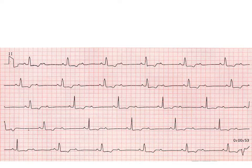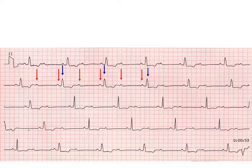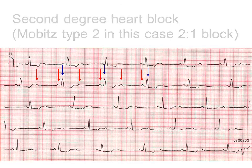On the other hand, in this situation we have regular P waves with every other beat conducted. So again some beats are conducted and some aren't, but in this situation there is no change in the PR interval. This is also second degree heart block but this is Mobitz type 2 — a 2-to-1 block because every other P wave is conducted with the alternate ones not conducted.